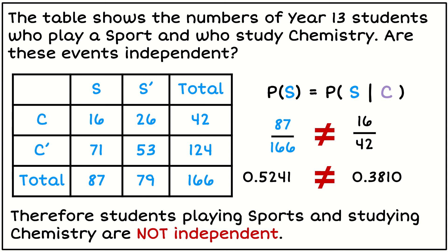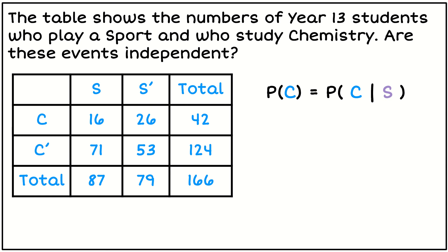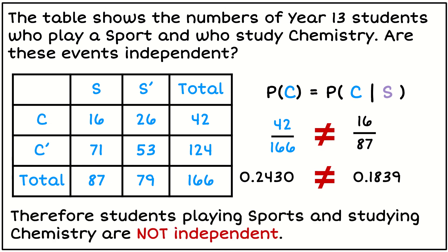Now with this conditional rule you could actually do it the other way around. So if the opposite was true, so is the probability of taking chemistry equal to the chance of doing chemistry given that you take sports? So it doesn't matter which way around, you should come up with the same determination of whether they're independent. The working is different but the decision you make should be the same. So the probability of chemistry, 42 out of 166. Probability of chemistry given sports, 16 out of 87. Convert those into decimals and we find that no, those decimals are not equal. Therefore the events are not independent.